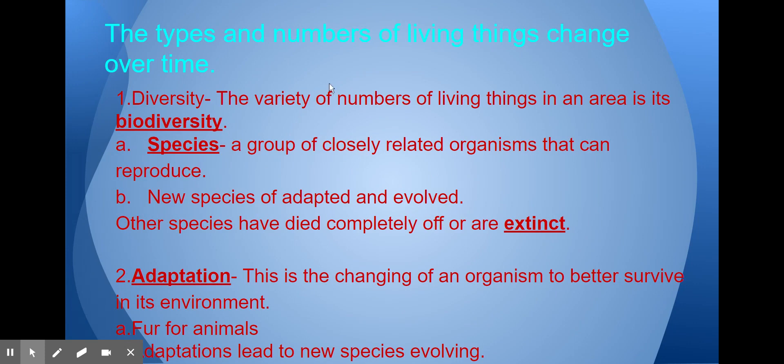The types and numbers of living things change over time. The more types of species in an area, the greater its biodiversity. Bio means life. Diversity means variety. A species is a group of closely related organisms that can reproduce.